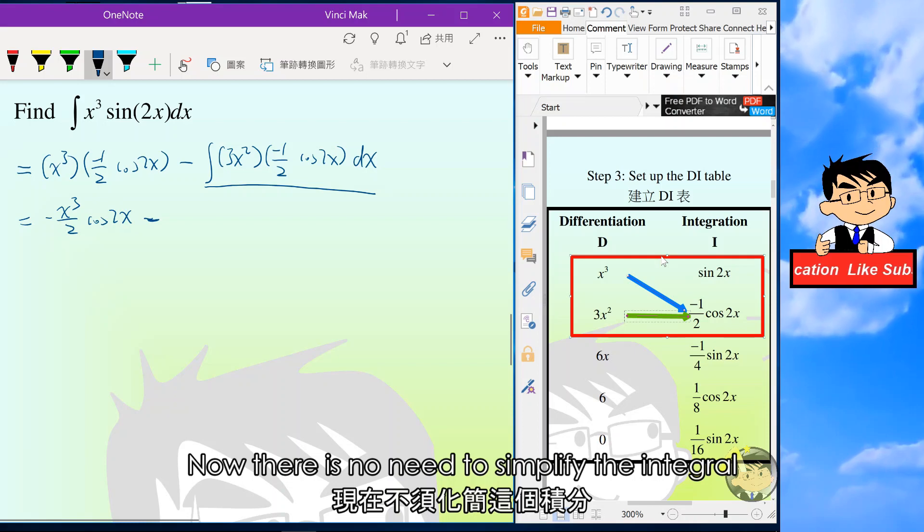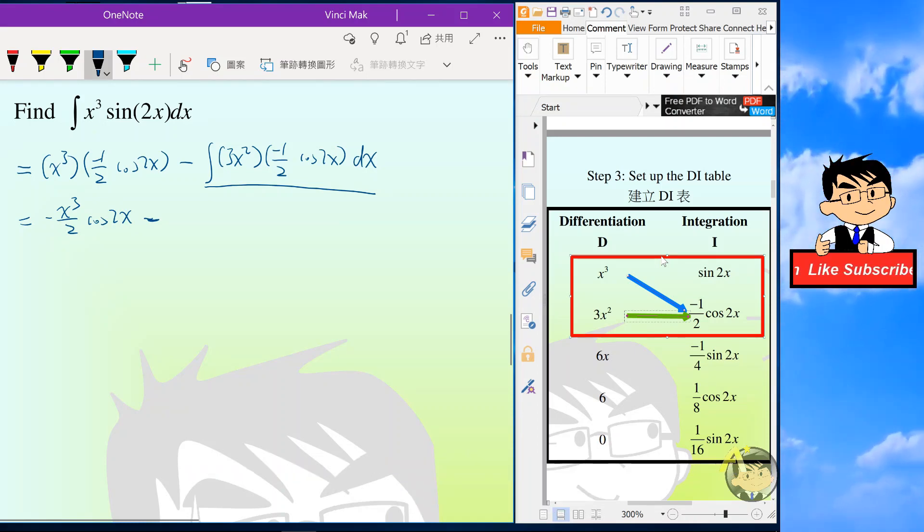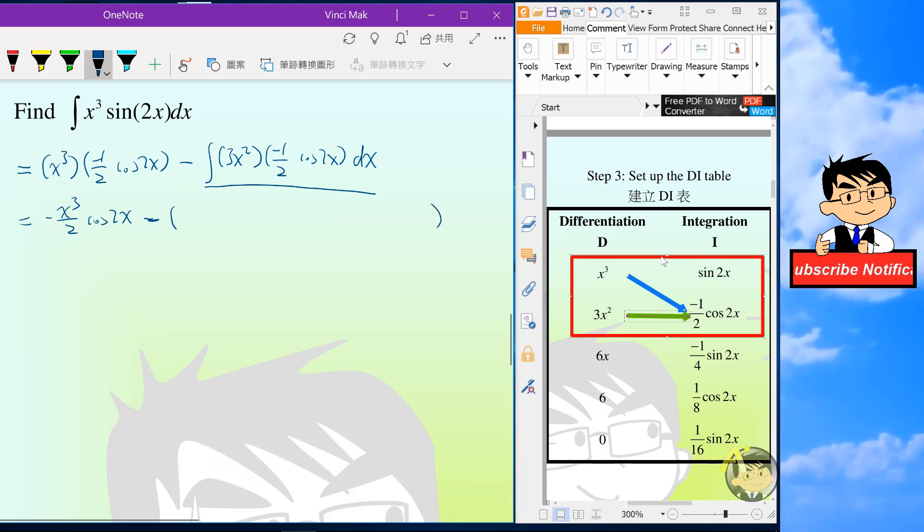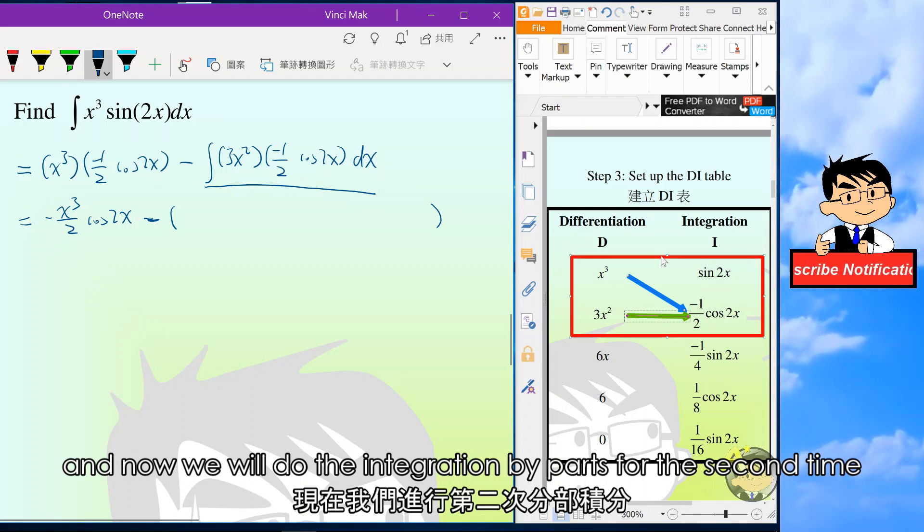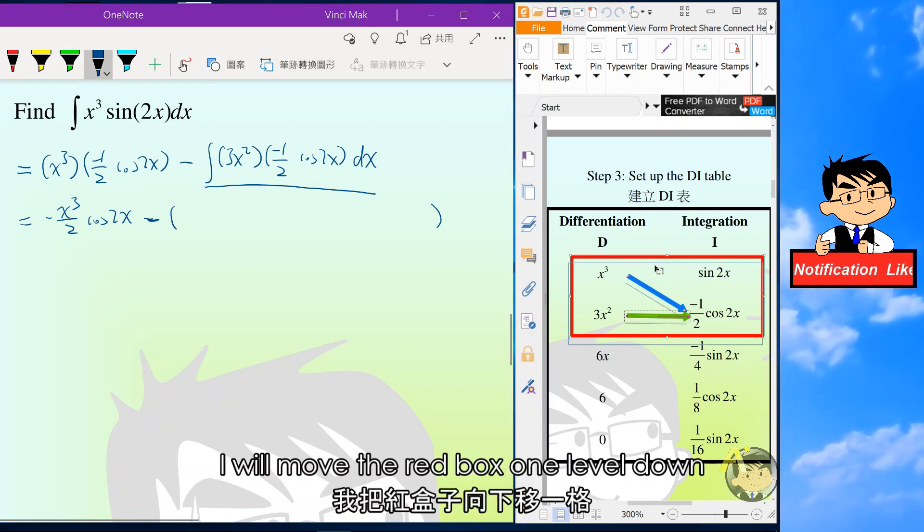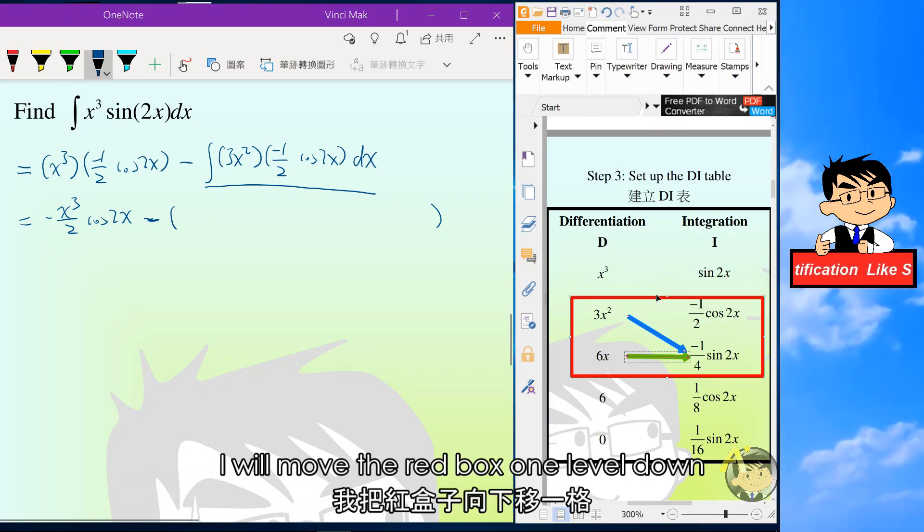Now there is no need to simplify the integral, just replace it with a bracket on the next line. And now we will do the integration by parts for the second time. I will move the red box one level down.